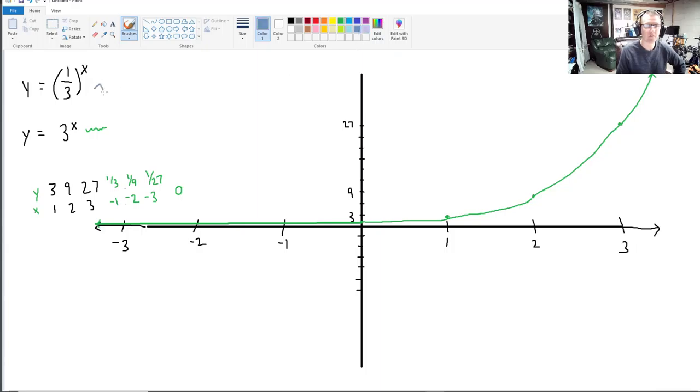Now in this kind of bluish color, gray-blue color, I'll graph 1 third to the x. And something that you're going to see here is there's a big similarity between these ones. If I plug in 1 now, what do I get? I get 1 third. If I plug in 2 now, I get 1 over 3 squared, which is 1 ninth. If I plug in 3, I get 1 over 27. That's 1 over 3 cubed.